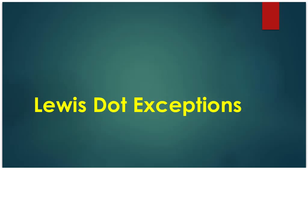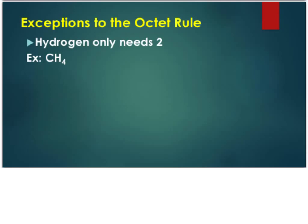Hello students, Mr. Courtney here. In this video we're going to be talking about exceptions to the octet rule. We've already mentioned that all atoms need eight valence electrons, except hydrogen which needs two.